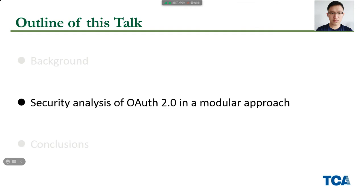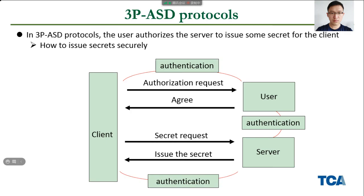Now let's introduce the security analysis of OAuth 2.0 in detail. First, we introduce the 3PSD primitive. In the 3PSD protocol, the user authorizes the server to issue some secret for the client, which models how to issue secrets securely and does not impose any restrictions on the usage of the resulting secret. During the issue process, identity authentication is the basis of the authorization.